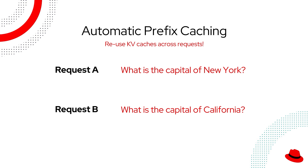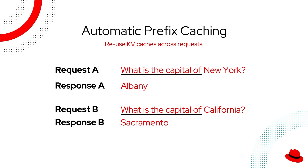maximizing GPU utilization and significantly reducing user latency. Prefix caching further optimizes performance by identifying and reusing common prefixes across different queries. For instance, if two users ask 'What is the capital of New York?' and 'What is the capital of California?', prefix caching leverages the overlapping tokens — 'What is the capital of?' — to streamline processing, speeding up responses and further enhancing efficiency.